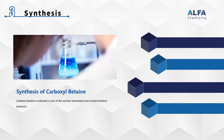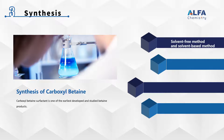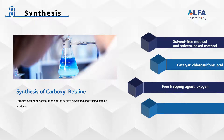Carboxyl betaine surfactant is one of the earliest developed and studied betaine products. Alpha-alkyl betaine with different carbon chains has been successfully prepared from the carbon-12 to carbon-18 series of alpha-brominated fatty acids and trimethylamine. By a solvent-free method and solvent-based method, or by using chlorosulfonic acid as a catalyst, oxygen as a free trapping agent, and chlorine as a halogenating agent, alpha-mix long-chain alkyl betaine was synthesized from coconut oleic acid or palmitic acid. The reaction equation is shown.